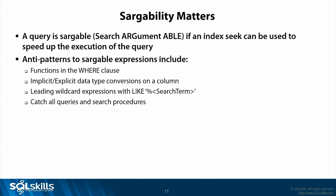My absolute favorite non-sargable pattern: CONVERT(varchar(10), datetime_field, 101). I've written it a thousand times as a developer. That forces an index scan — it will always force an index scan. Today, just CAST it as a date if you need to cut the time off. If you have older versions of SQL Server, there's a DATEADD/DATEDIFF trick that still treats it as a date but lops the time off and allows it to run very fast. Implicit conversions — your schema doesn't match your filter criteria — huge problem. We see it all the time, and it's easy to fix: change the schema or change the data type.